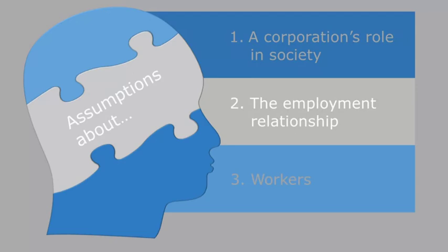Now let's turn to the employment relationship. I'll present four different viewpoints on the employment relationship — two of them underlie different HR strategies, and two others are more critical of HR. To do this, I'm going to present four different pieces of line art that are around 90 to 120 years old. I think these are really cool and a great way to think about the intellectual assumptions we all make about the employment relationship.